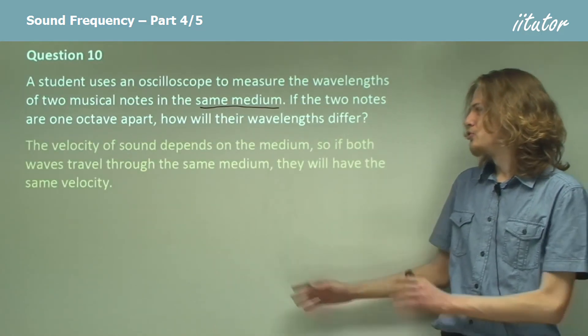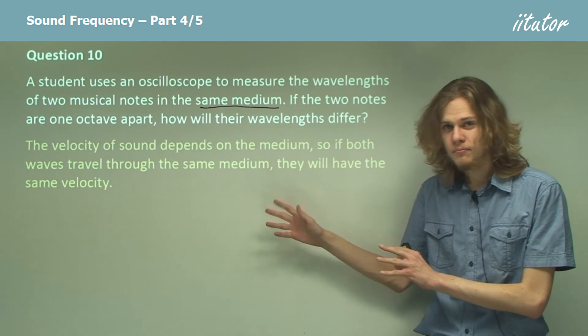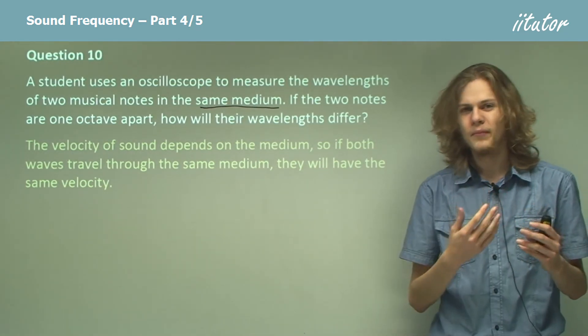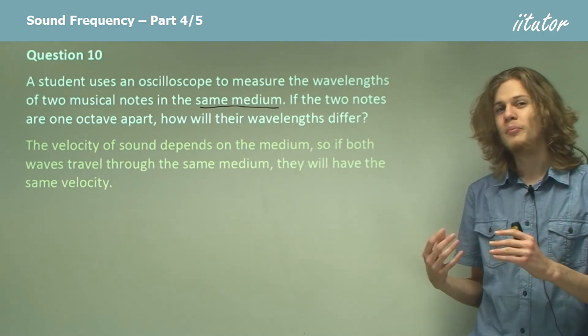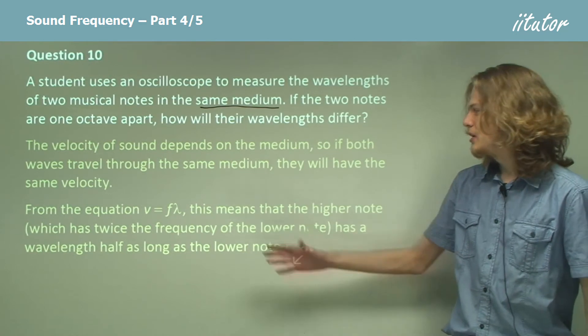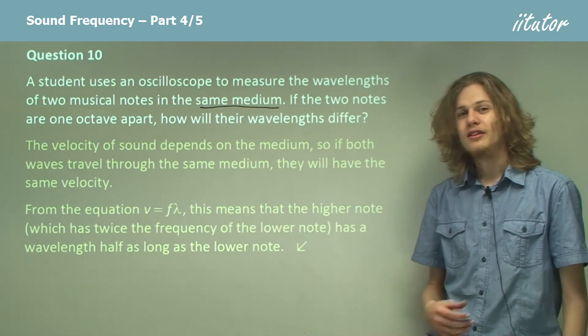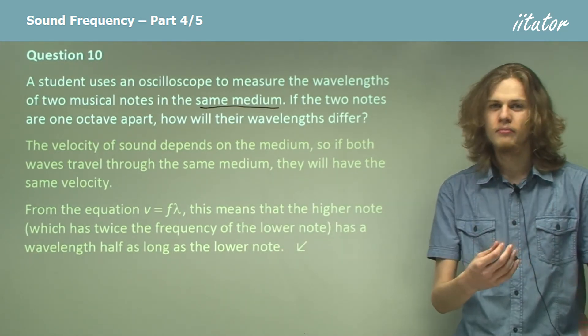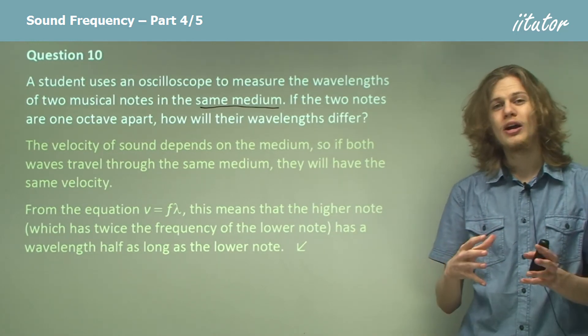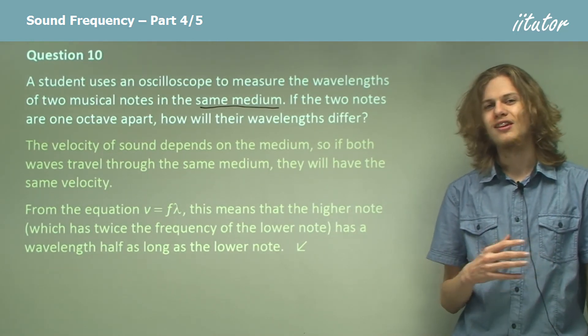So if the two waves travel through the same medium they'll have the same velocity - that's an important part of the question because if they're traveling through different media then their wavelengths will depend on the speed of sound in that medium. So from our equation v equals f lambda, that means that the higher note, the note that is one octave above the other, will have a shorter wavelength by a factor of exactly one-half.